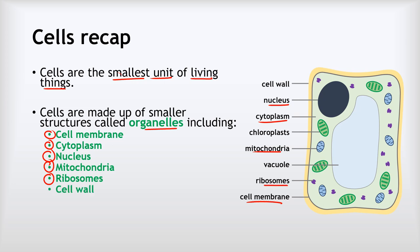We've also got the cell wall, which provides strength and support for the cell; the vacuole, which stores sap and supports the cell; and lastly the chloroplasts, which are where photosynthesis takes place.